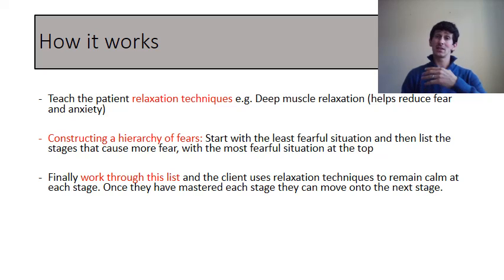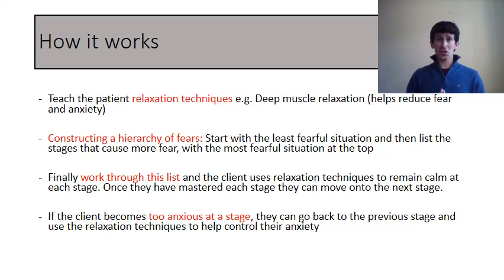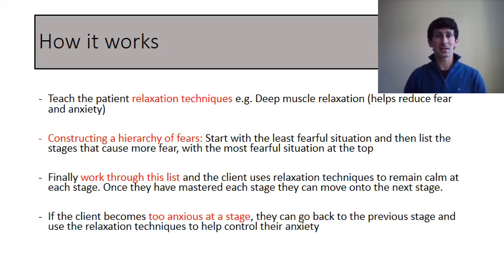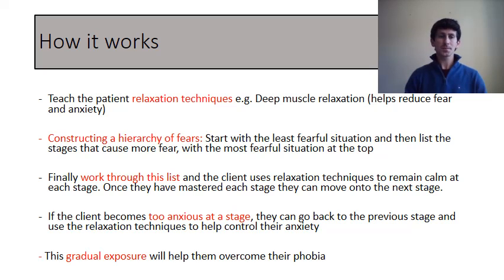If they become too anxious at one stage — say Mr. Hastings can't handle the spider being free on the table in front of him — we can stop that situation if the relaxation techniques aren't working and go back a stage. He realizes it's actually not that scary, then moves back to the stage he was afraid of. It's all about this gradual exposure: if you gradually expose them to their phobic stimulus, eventually they will overcome it.